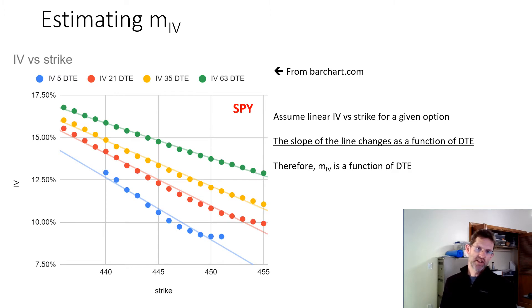Then I plot IV as a function of strike price. So for strike prices reasonably close to the stock price, the IV as a function of strike is roughly linear. You can see that sort of breaks down for the five days to expiration option. But for a rough approximation, at least on this stock, it works.